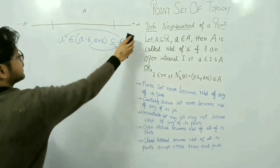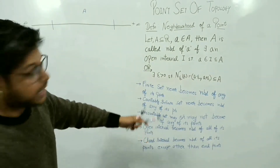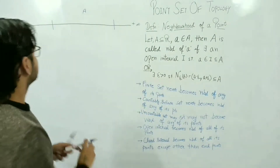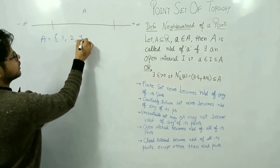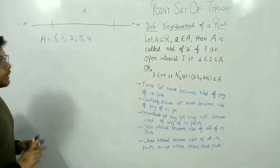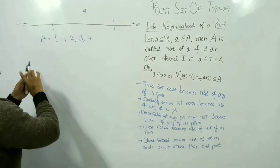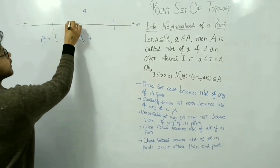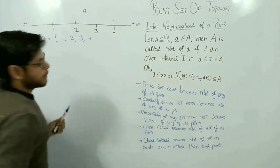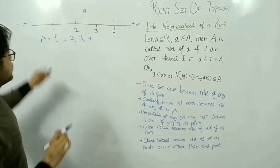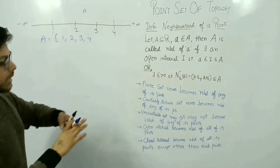Now let's look at an example. A finite set never becomes a neighborhood of any of its points. Let's take the finite set {1, 2, 3, 4}. On the number line, here is 1, this is 2, this is 3, and this is 4.